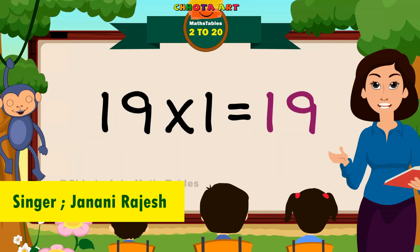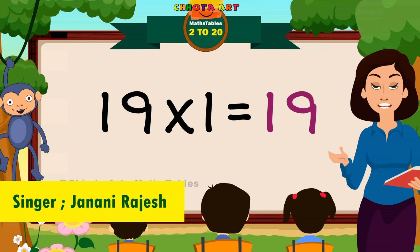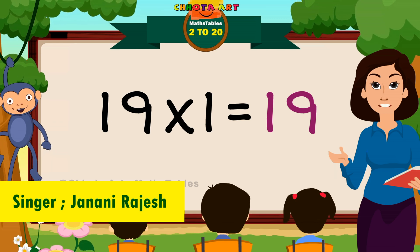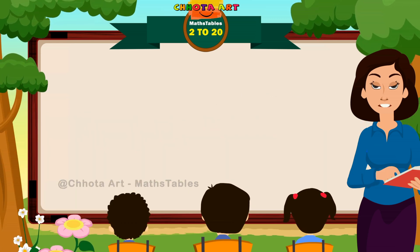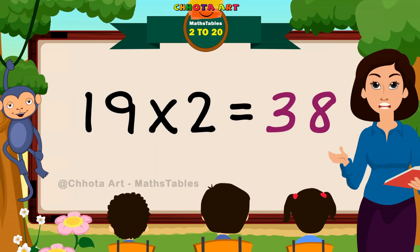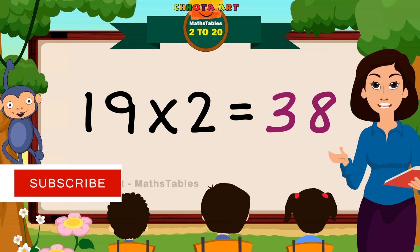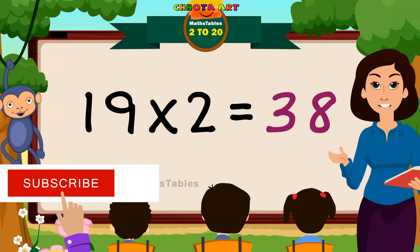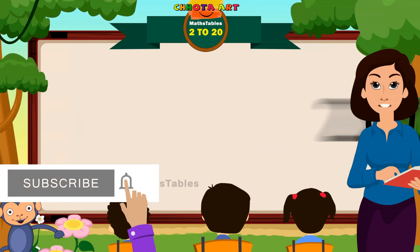Nineteen ones are nineteen. Nineteen twos are thirty eight.